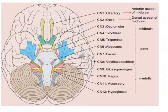We have 12 cranial nerves on each side: Olfactory, Optic, Oculomotor, Trochlear, Trigeminal, Abducens, Facial, Vestibulocochlear, Glossopharyngeal, Vagus, Accessory, and Hypoglossal.